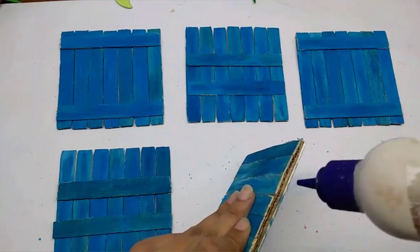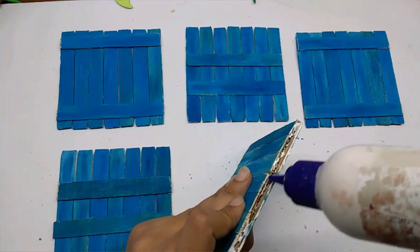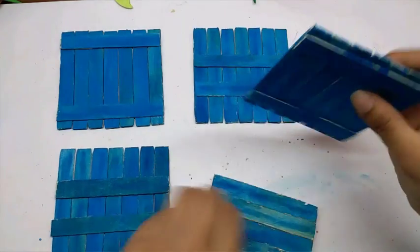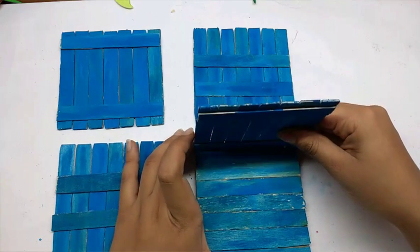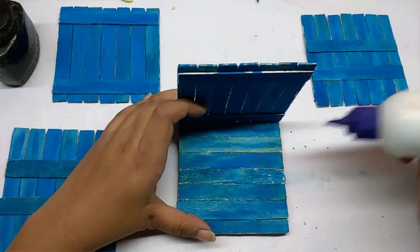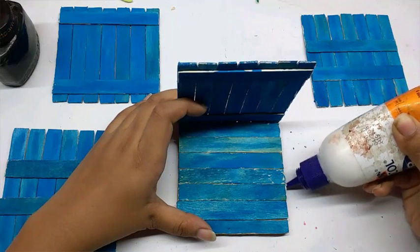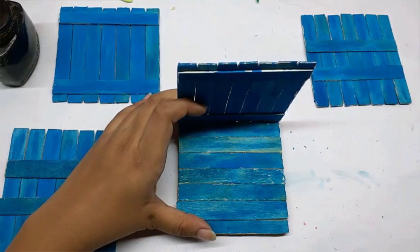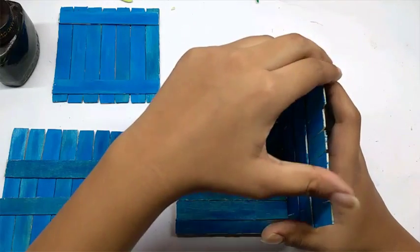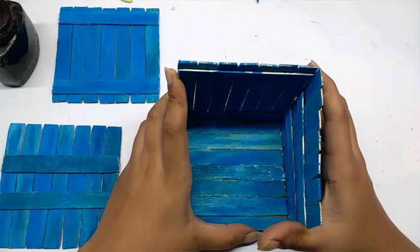Now we are going to make the walls. So first apply glue on the base liberally, and then stick one side on it. Now let it stick and then we will stick the other side. Now I am going to attach the other wall, other side. The first one is still not stuck very well. You have to apply glue on the second side and then do it. So this way attach the other two sides also.